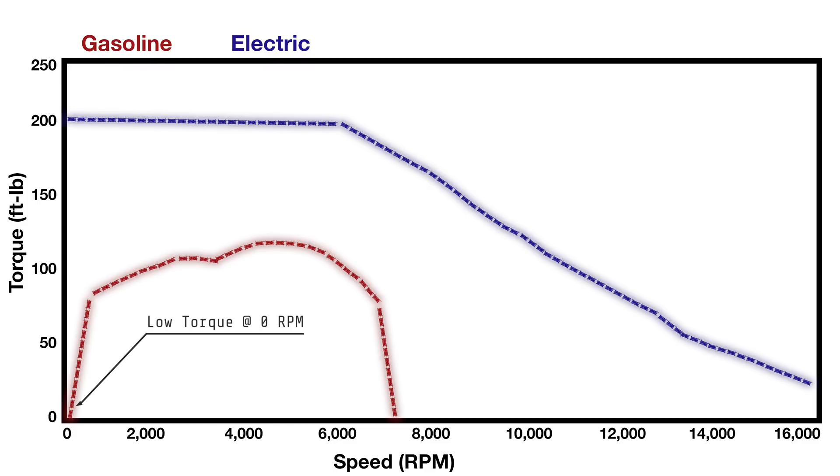In contrast, the gasoline engine doesn't really start delivering its torque output until about 1500 RPM, and it will continue to rise until it gets near its max output and begin to fall off.